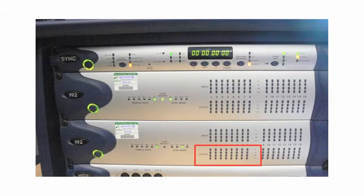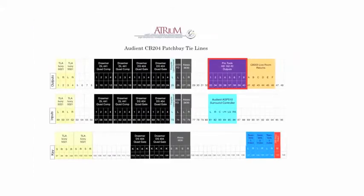The 8 outputs from the second 192 unit appear on the patch bay. So if you are mixing in software using a stereo output, then no patching is required, as your left and right output will appear on the tape return path for channels 25 and 26.